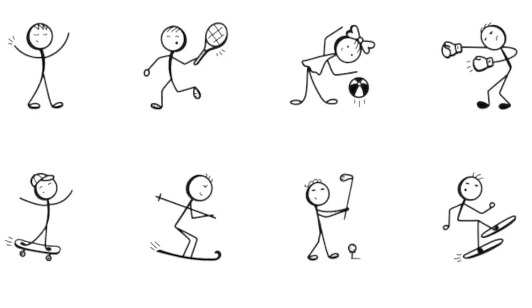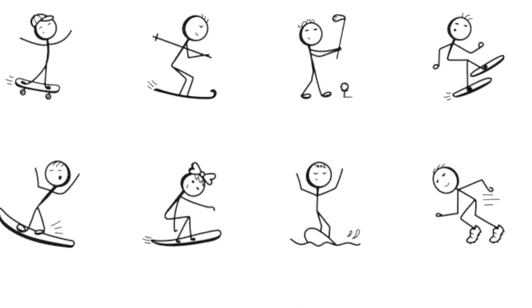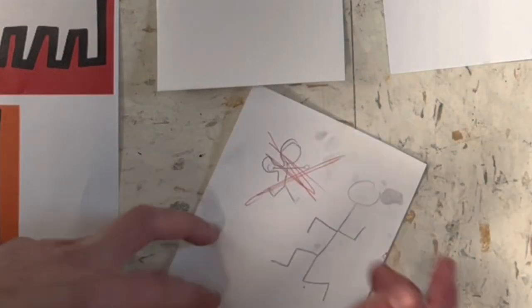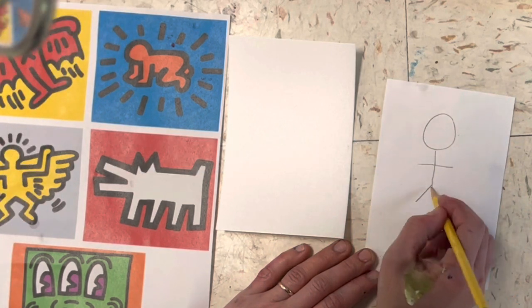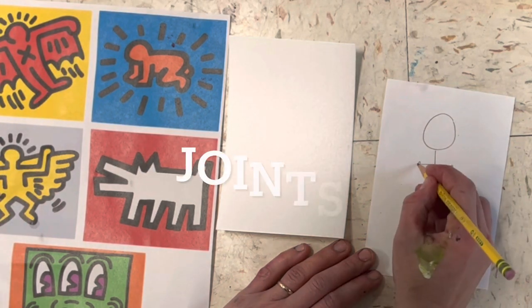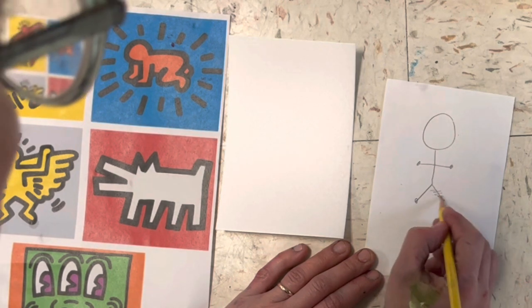So your first job is to decide what do you want your person to do. You can make as many practice sketches as you want, just make sure that your people are not tiny. First draw a regular stick figure once you've got your idea, and then make sure to give that stick figure joints, knees and elbows.